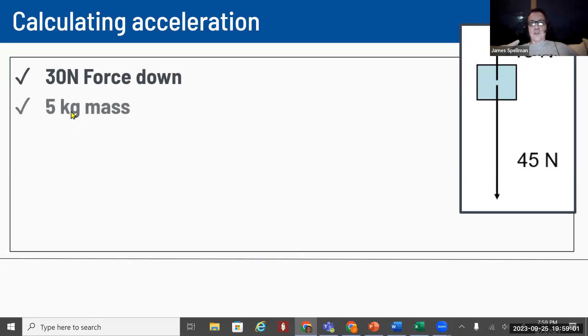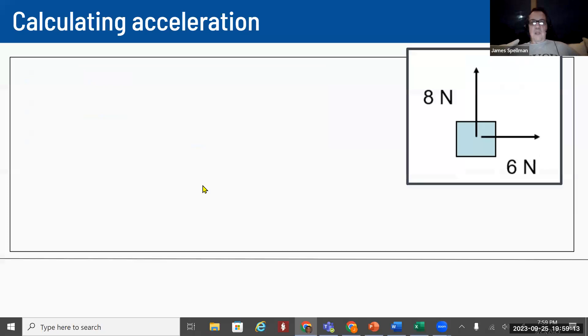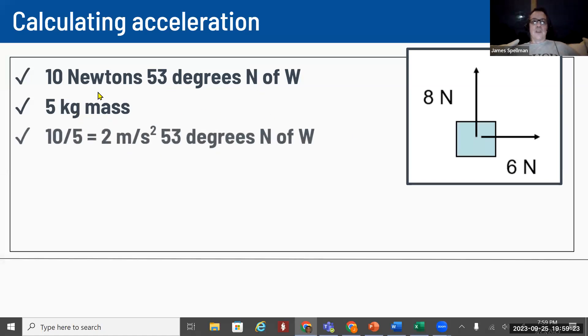On number two, we had 30 Newtons down. And if we had a 5 kilogram mass, we would take the force and divide it by the mass. 30 divided by 5 is going to be 6. So we get the same answer, but this one's going to be in the down direction. And then finally, the last one, we determined that the force was 10 Newtons and we knew the direction was 53 degrees north of west. If we had a 5 kilogram mass, we take force, divide it by mass, and that gives us our acceleration. So 10 divided by 5 gives us 2. So we'd have an acceleration of 2 meters per second squared, and the direction would be 53 degrees north of west.